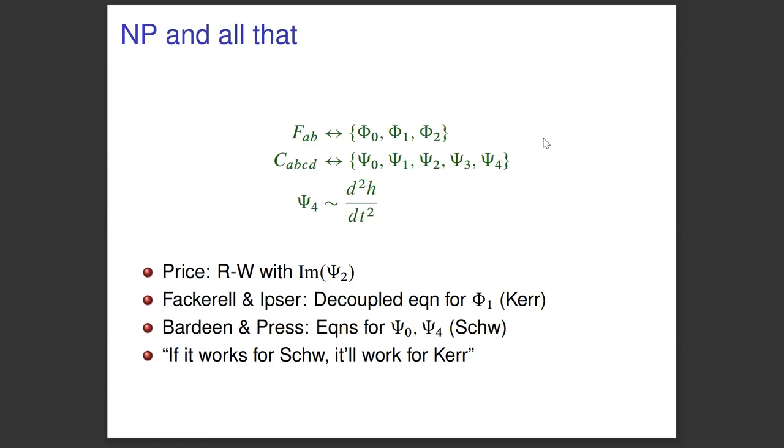So Richard Price was the one who introduced this formalism into Kipp's group. And he showed that you could derive this Reggie Wheeler equation by a new method using this Newman Penrose Formalism. If you took this psi two quantity, the middle one, it's a complex number, and its imaginary part satisfied the Reggie Wheeler equation. And so Fackrell and Ipser, so Ipser was also one of the graduate students, tried to do something analogous for the Kerr metric. They tried the easier electromagnetic case. And so they looked at that middle quantity phi one.